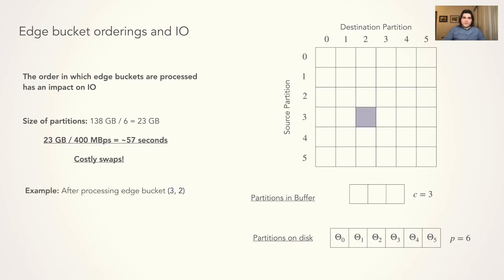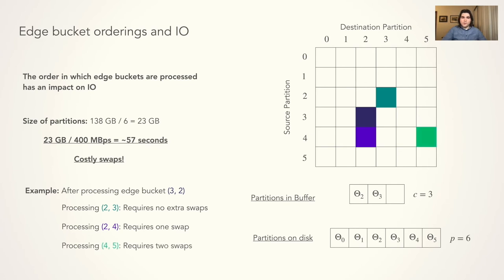For example, if edge bucket 3,2 has been processed, the partitions 3 and 2 reside in the partition buffer in CPU memory. It requires no extra swaps to process edge bucket 2,3, but processing edge bucket 2,4 requires one swap. Processing edge bucket 4,5 requires two swaps.